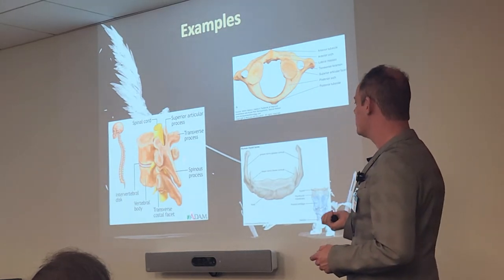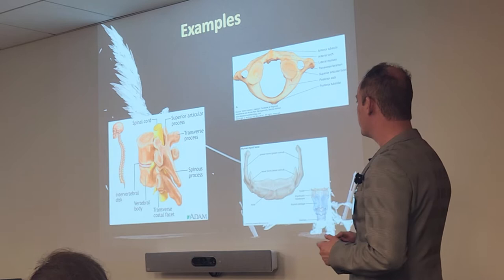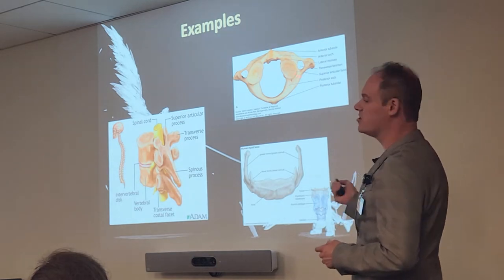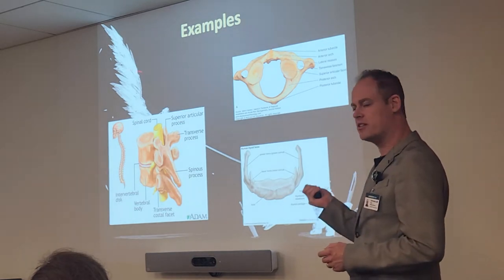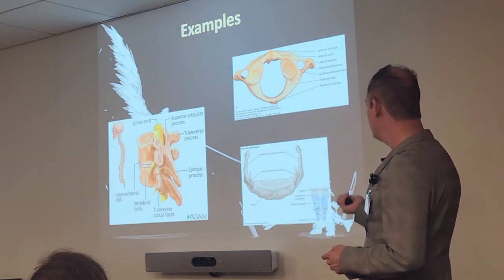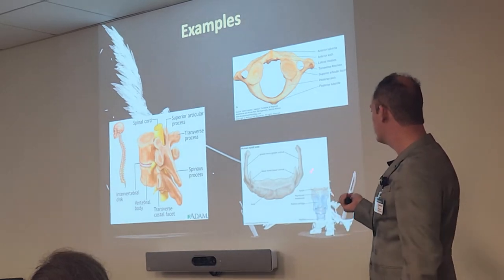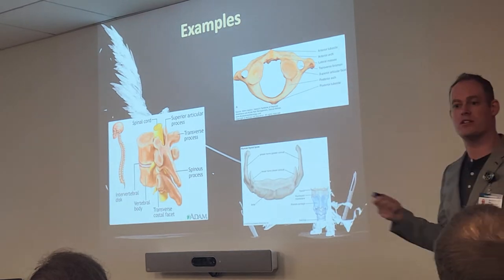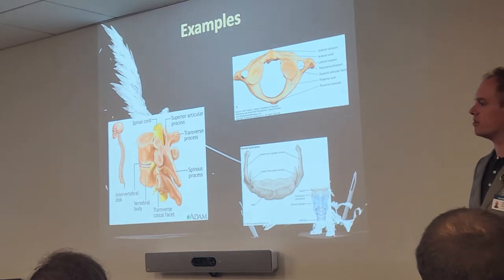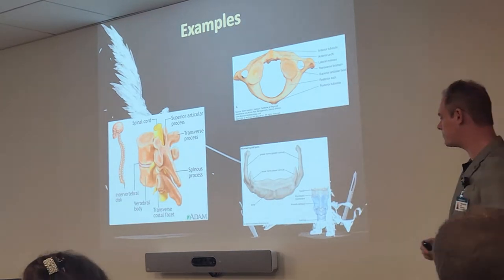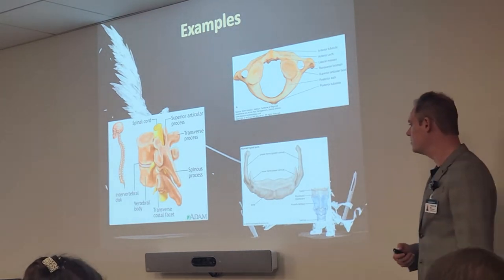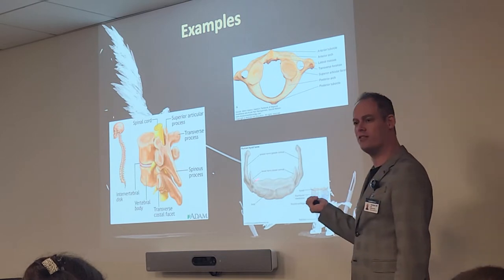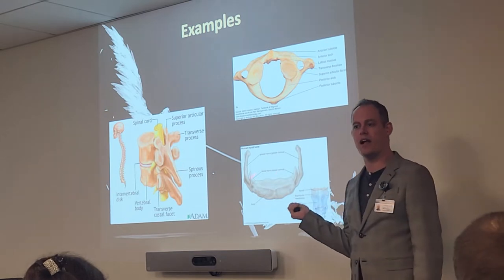There are those spinal vertebrae — we're not going to be studying all of these yet. The hyoid bone is also considered an irregular bone. Remember, that's what they look for when someone has been hanged — they look for it to be fractured.